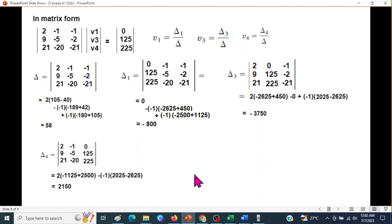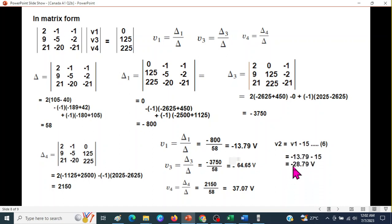Similarly, for delta 2, we remove the mid column. Same technique. Sorry, for delta 3. And then for delta 4, we remove the last column and we find delta 4. So, we have found all the deltas. Plugging in this formula, we get V1 as minus 13.79 volt. V3 is minus 64.65 and V4 is 37.07. So, V1, V3, V4 we have found. What we have V2 left. For V2, we had this formula. We had learned that V2 is V1 minus 15. So, now that we have V1, plugging in, V2 will be minus 28.79. So, this is your answer.